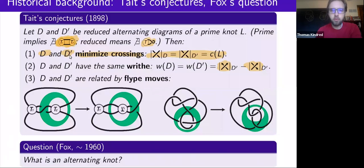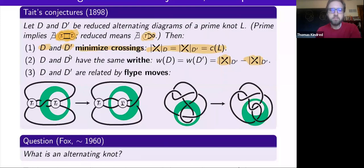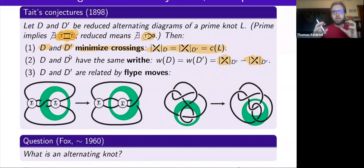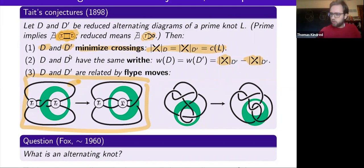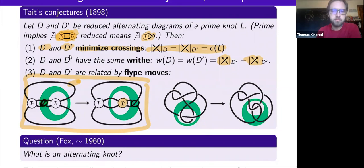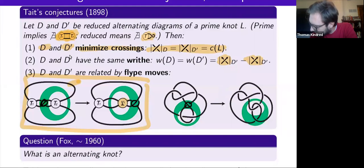For example, the writhe is an invariant of an oriented link — it does matter what the relative orientations on the link components are. The third conjecture that Tait made was that all reduced alternating diagrams of a given prime knot are related by a particular type of move called a flype. A flype involves splitting your diagram into two pieces that are almost separate with one crossing in between. You can take this tangle T2 and flip it over — that's where the name comes from. When you flip it over, the whole tangle gets flipped and the crossing gets moved to the other side of the tangle. On the right-hand side, we have an example of a flype move on the 6-3 knot.